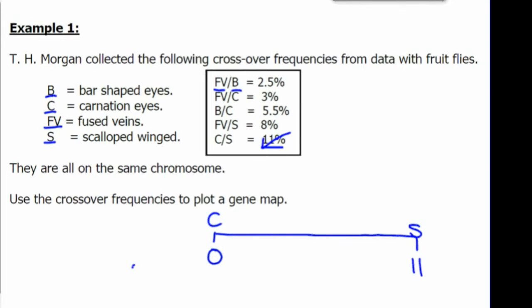From there, we want to look at a gene that has reference to both C and S. So let's look at FV is 3% away from C and 8% away from S. So if we put FV on number 3, we'll check. Is that also 8 away from S? Yes, it is. 3 plus 8 is 11.